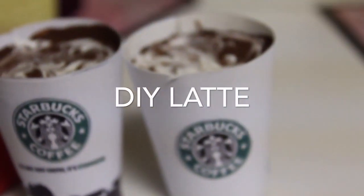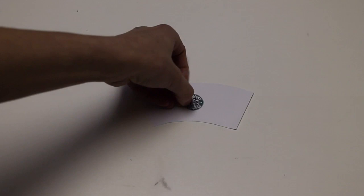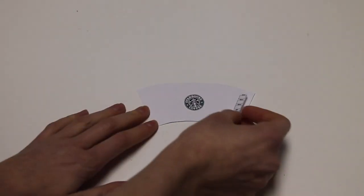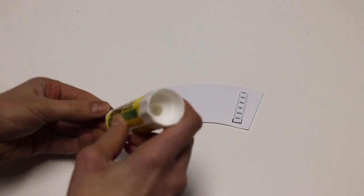The next Starbucks drink we're going to make is a latte. So to do this I'm going to take a semi-circle piece of white cardstock and I'm going to glue on a Starbucks label as well as like a little checkmark place, I don't know what you call it. And then with a glue stick I'm going to glue this on.